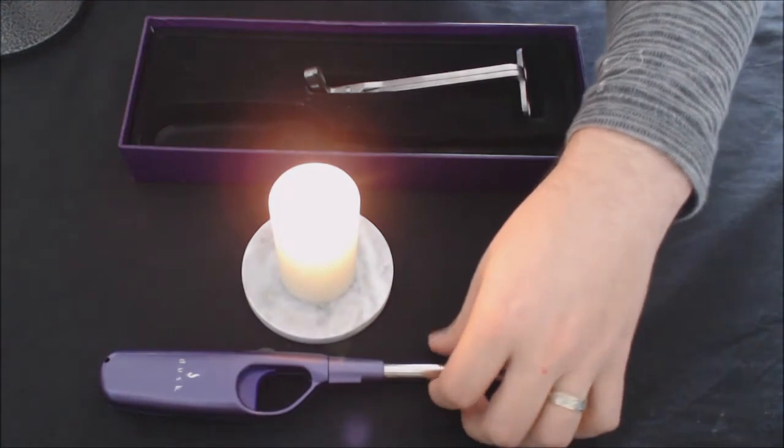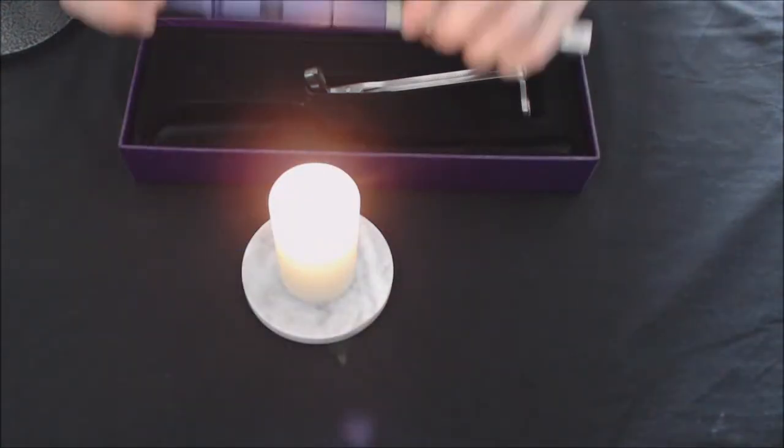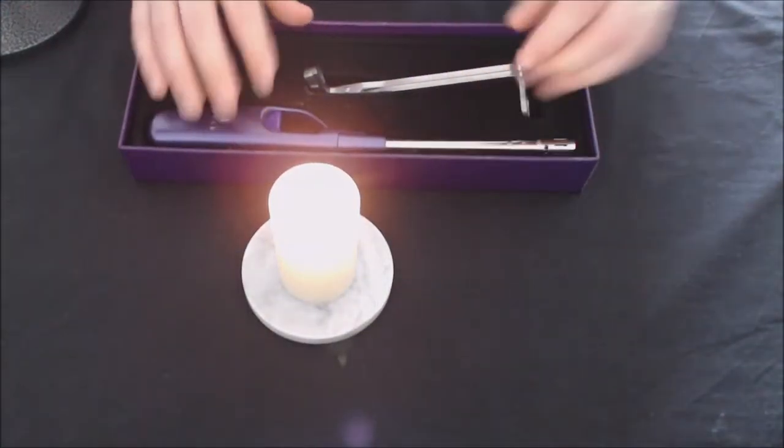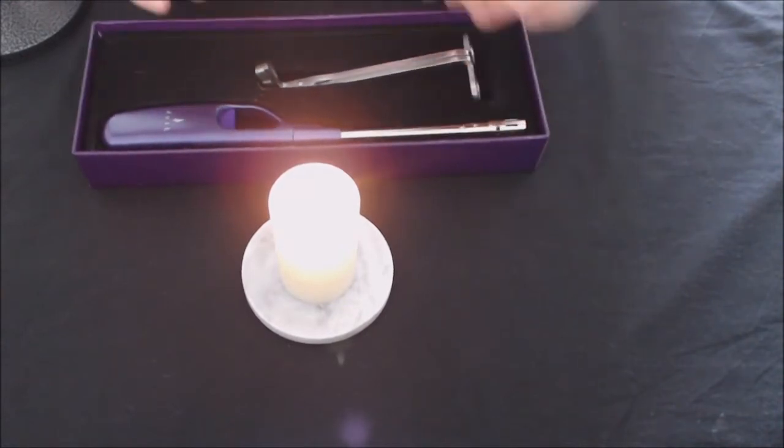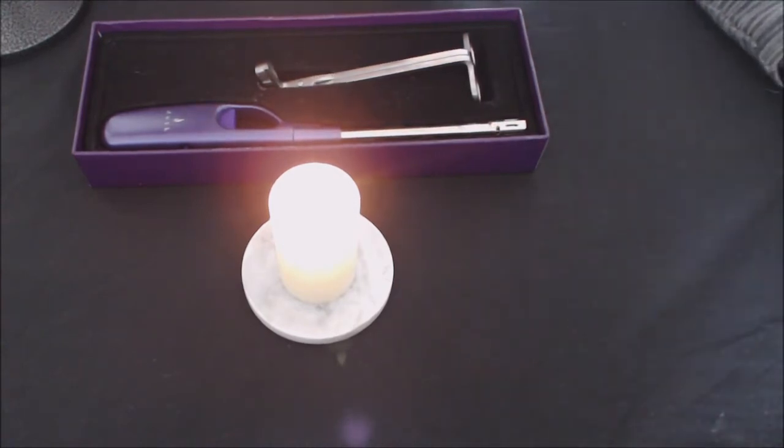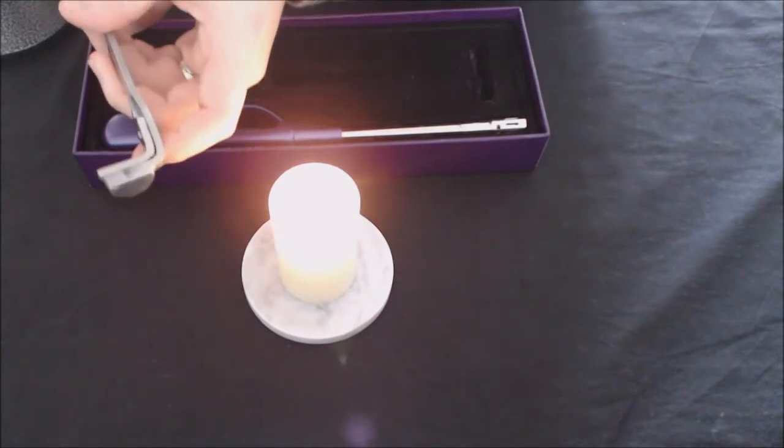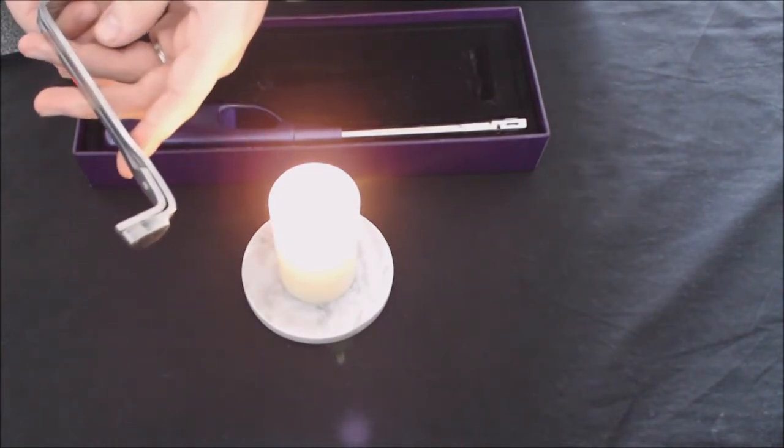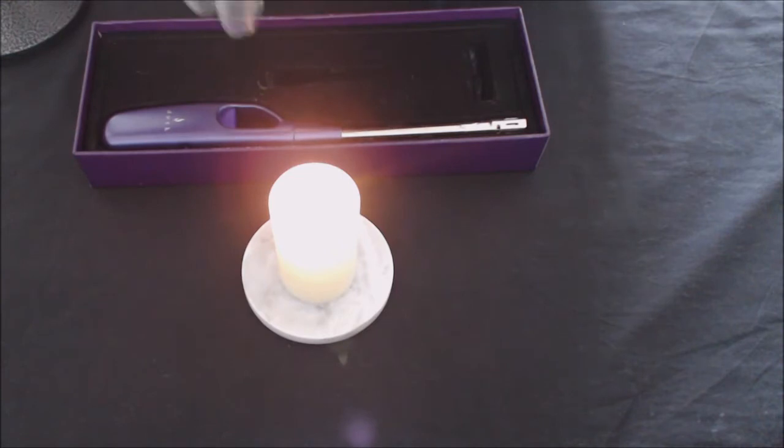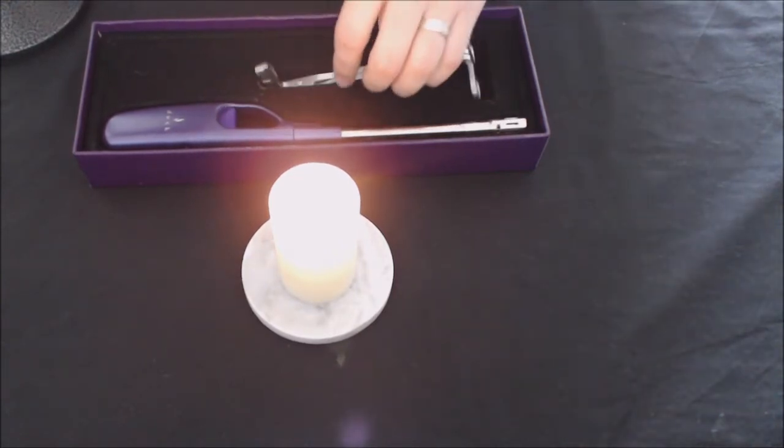So that is the first item that's inside here is the lighter. The second item is something that I'm going to go into more detail later when I'm burning one of the jar candles. It is called a wick trimmer. It's an incredibly helpful little item and as I said I'll go into more detail about that in a minute.